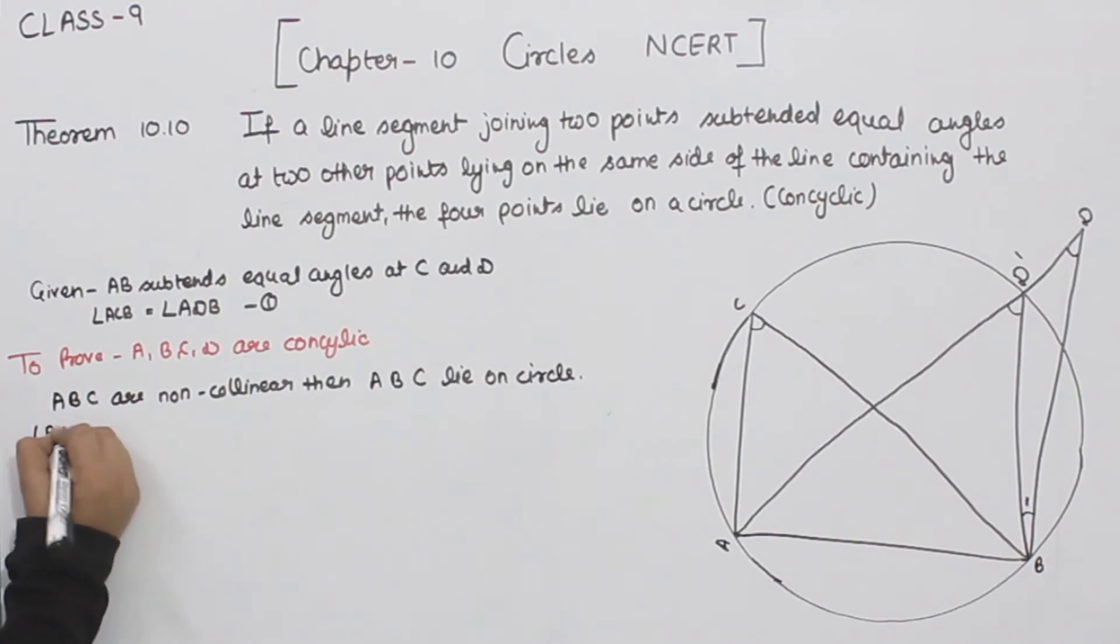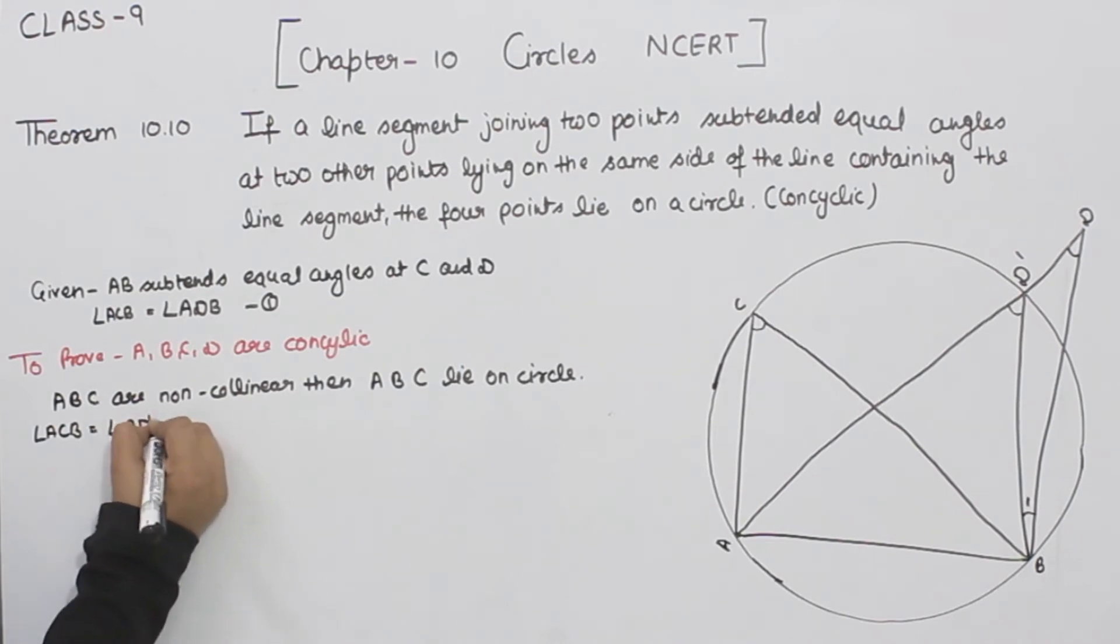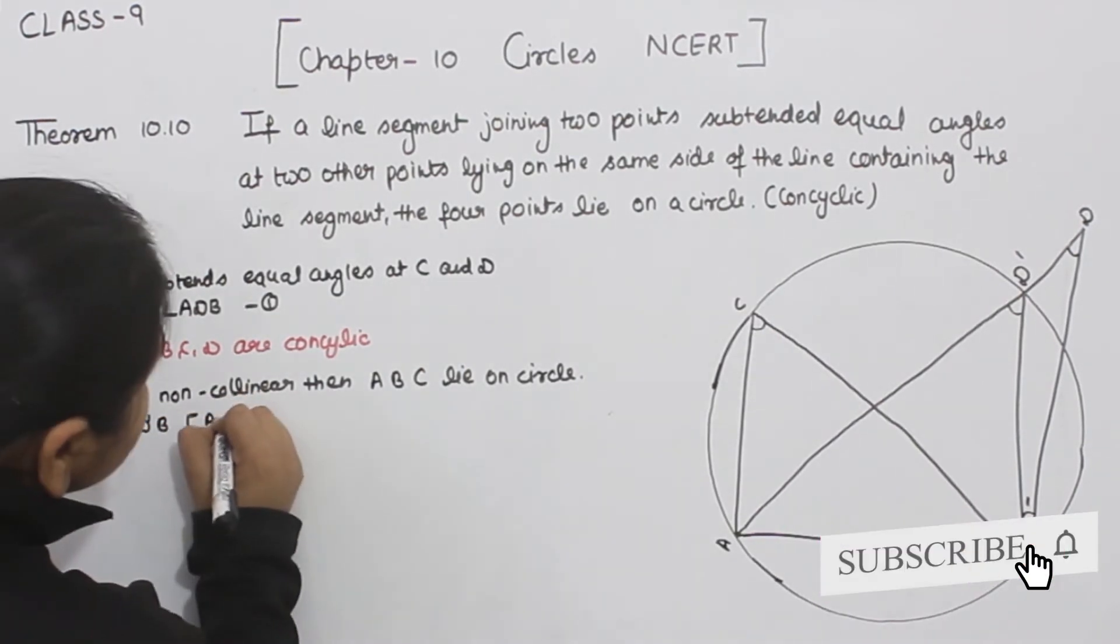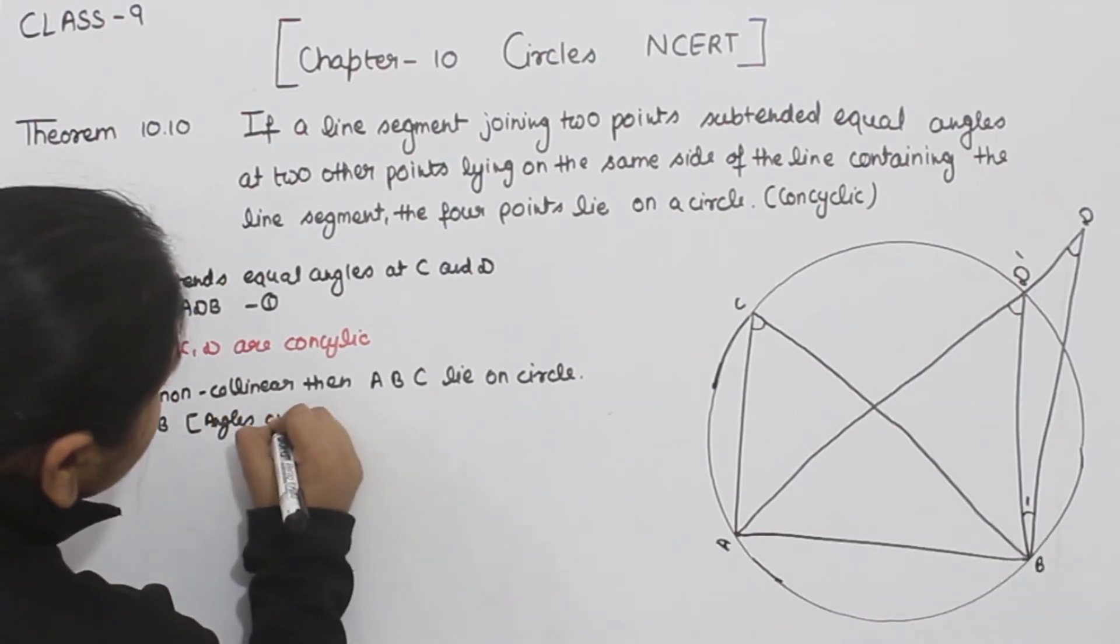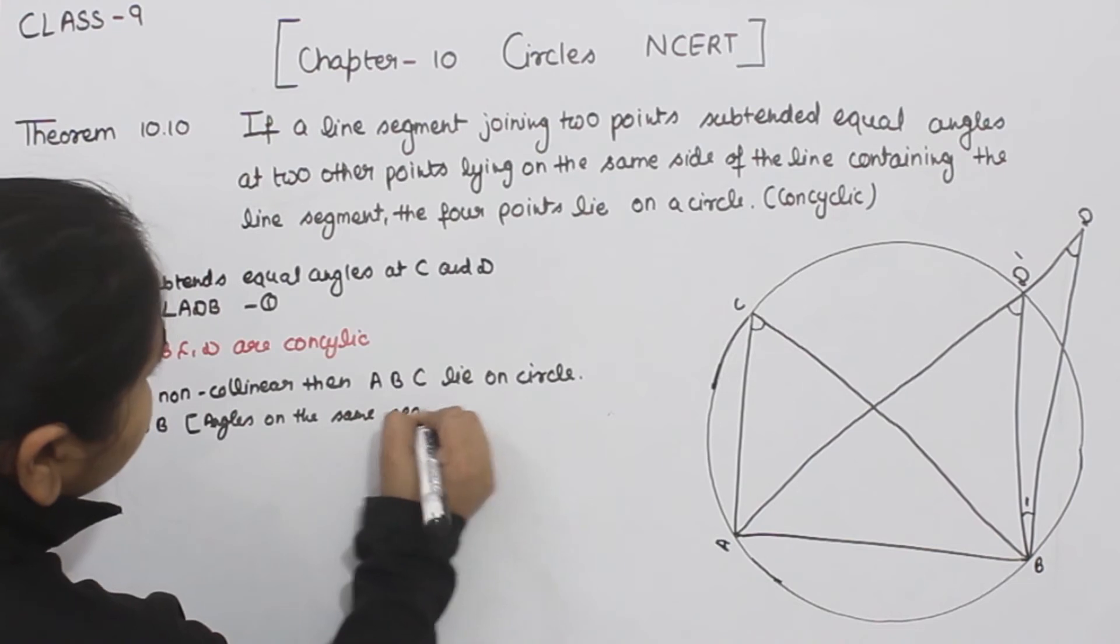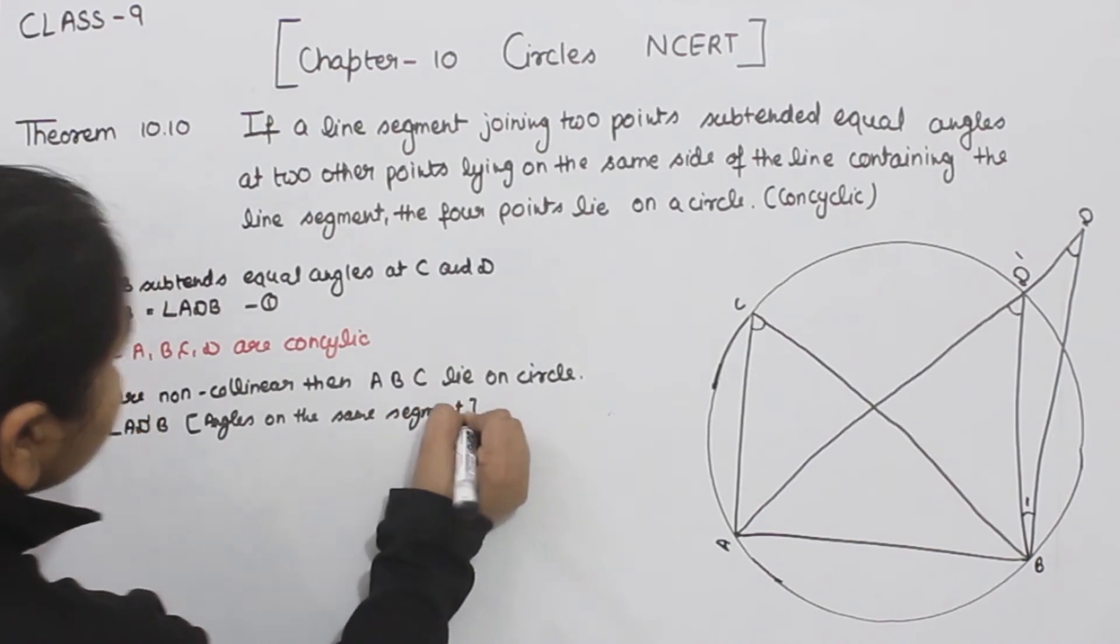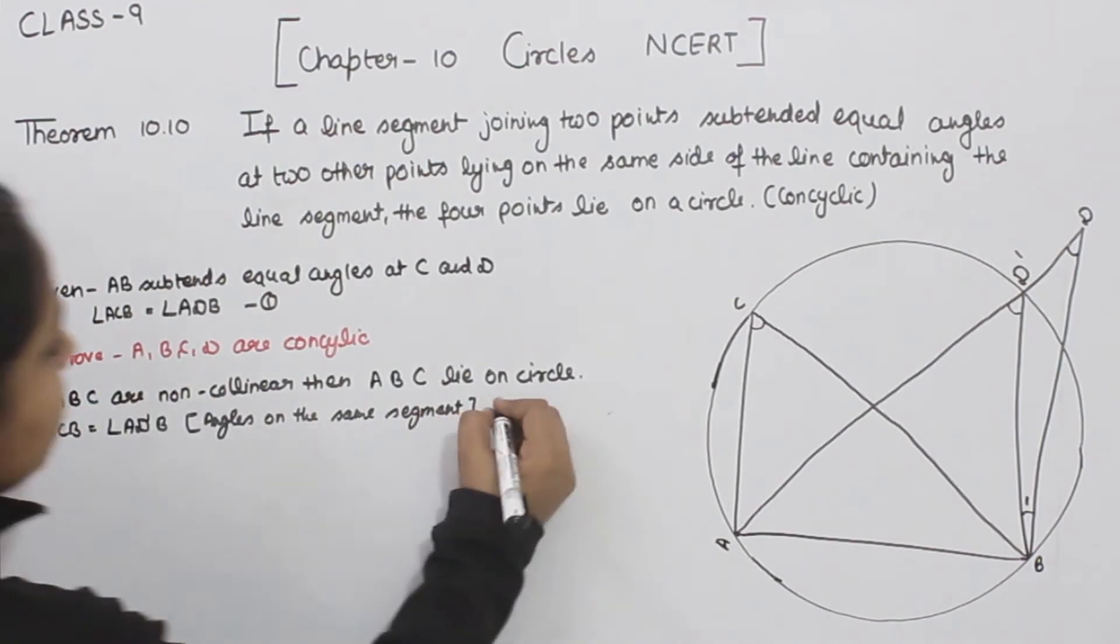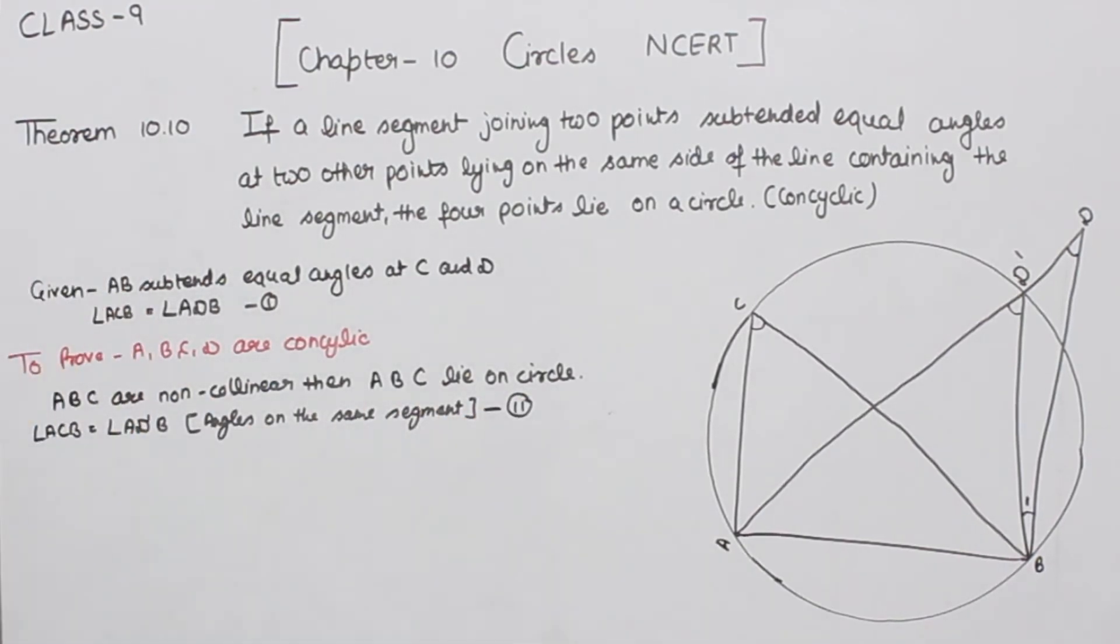Now angle ACB is equal to angle ADB. This is the equation number two we are having.